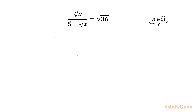Let us get started by writing our denominator cannot be 0. So square root x cannot be 5, which means x cannot be 25.